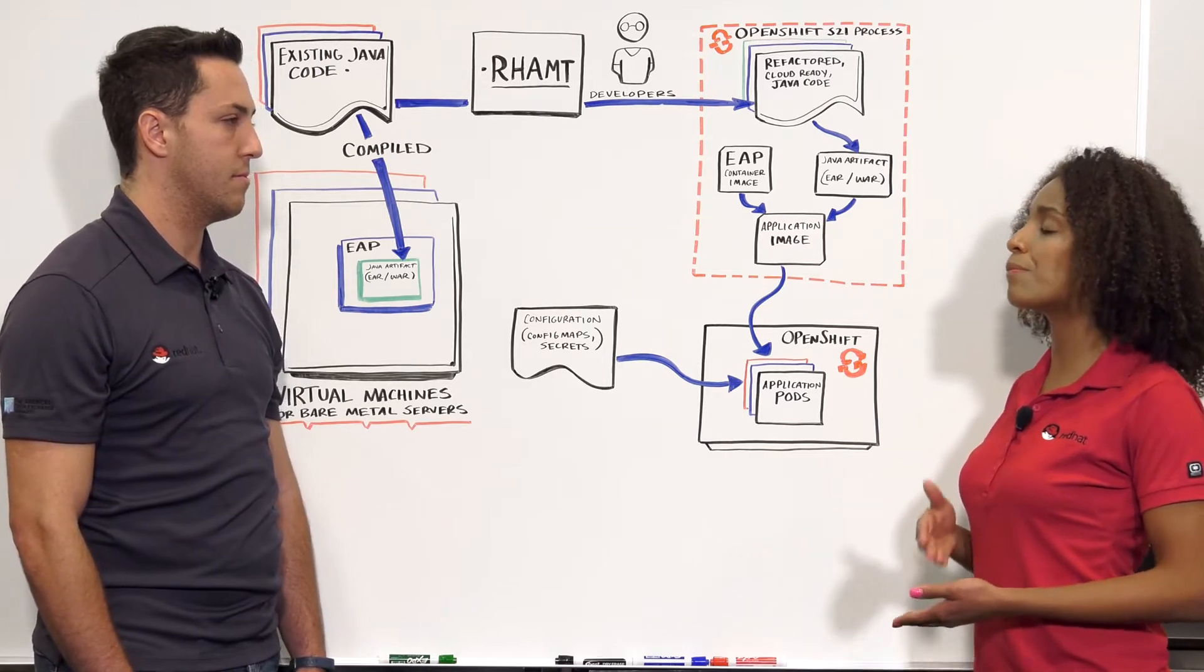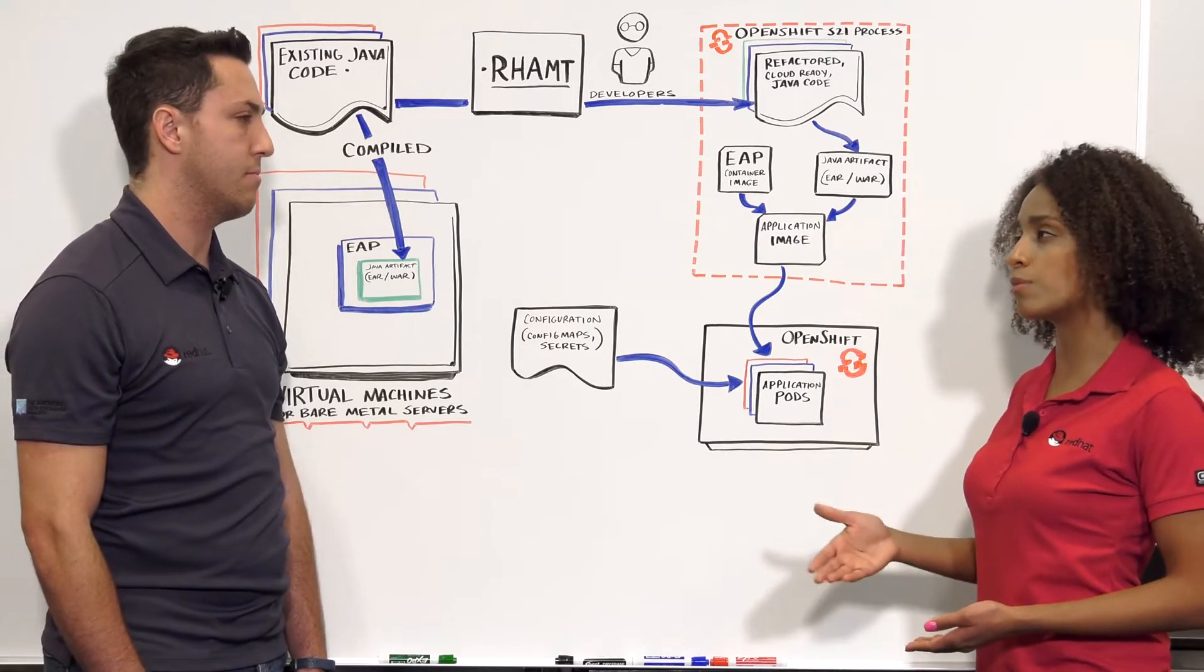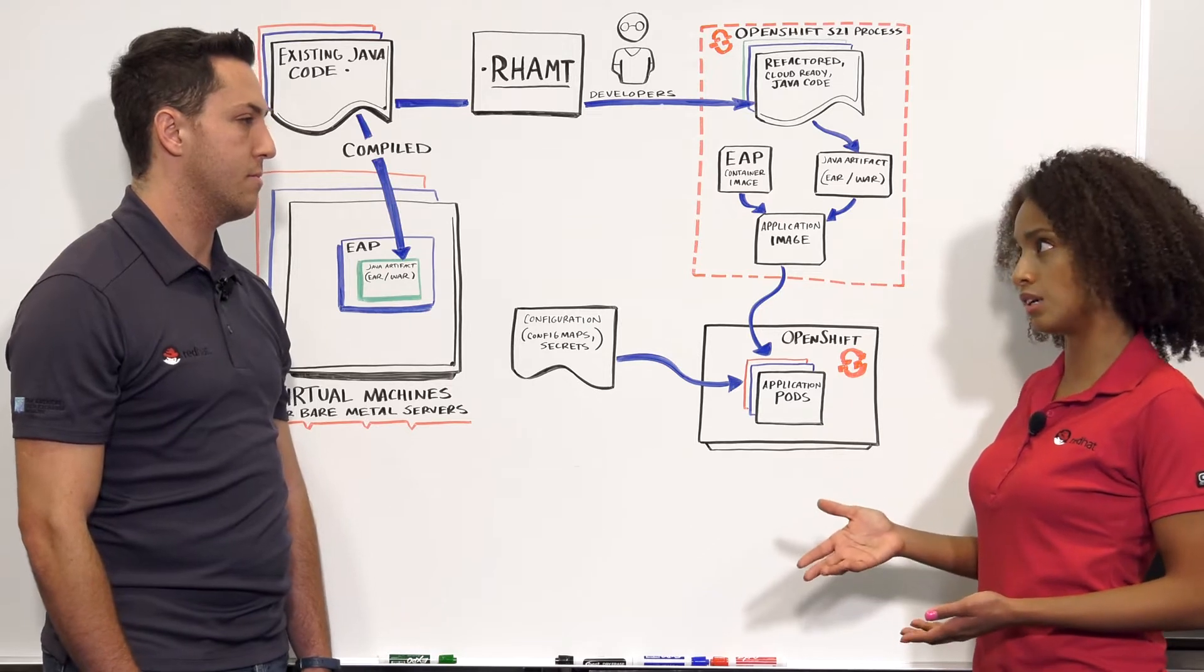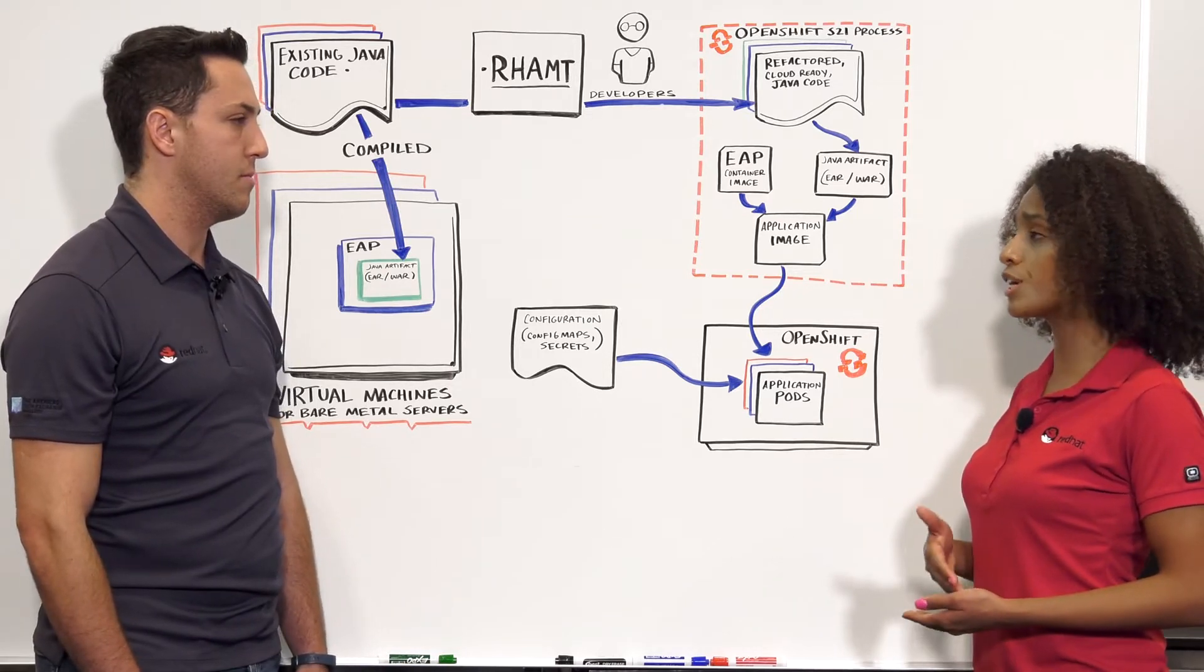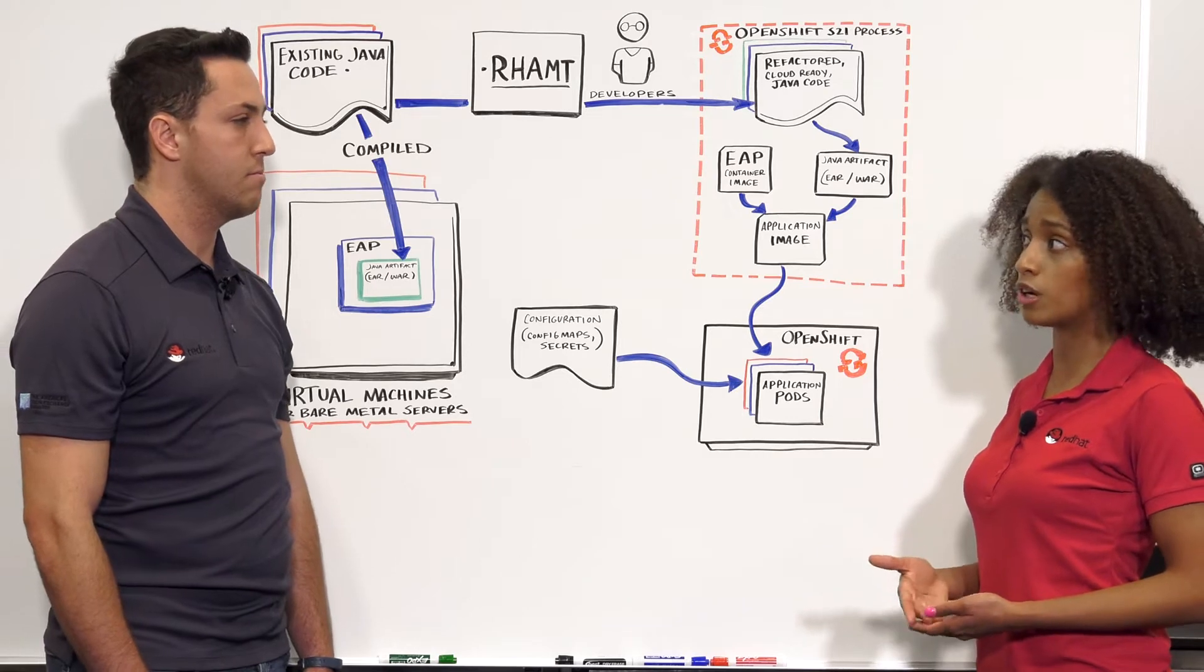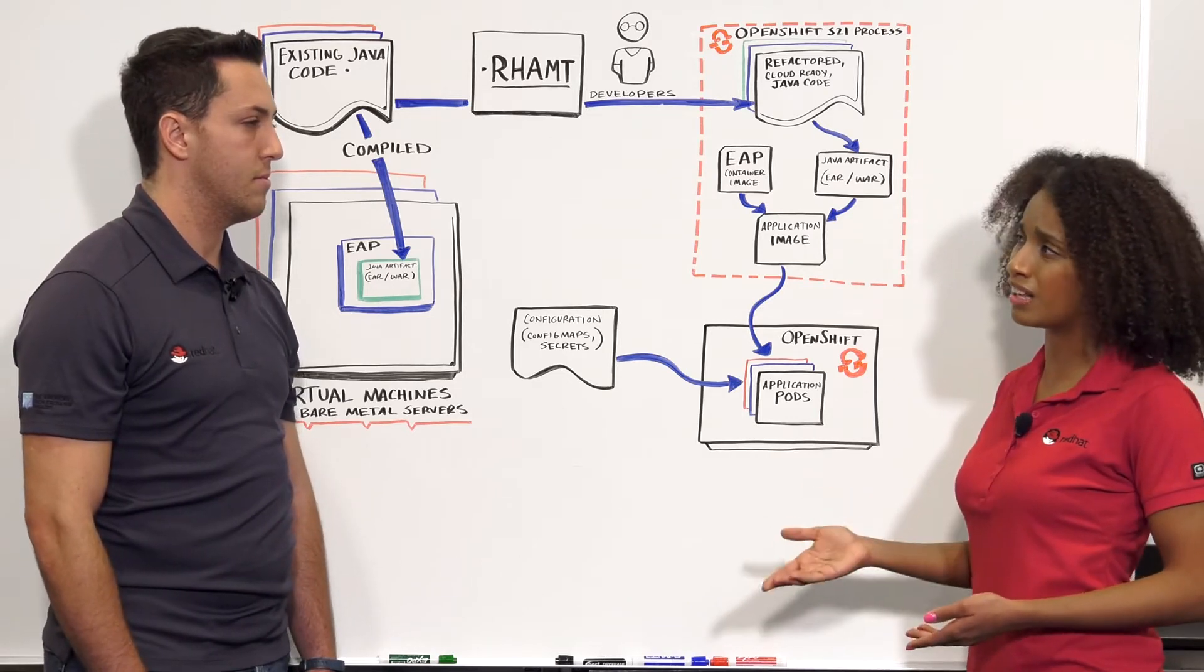But let's say that my app is cloud ready and we have a CI process in place and we don't want to rebuild it inside of OpenShift. I know that we can do this via the OC command line tool on the Jenkins server, but is there a more elegant solution?